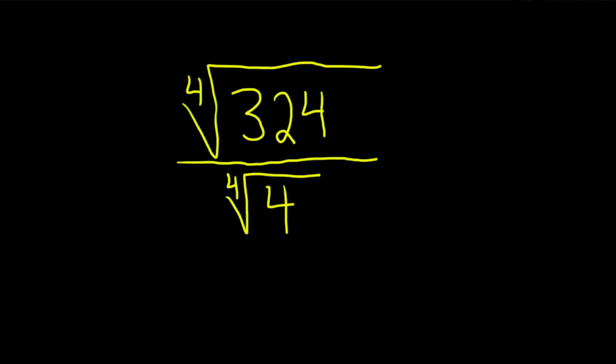Hi, in this problem we have to divide. We have the fourth root of 324 divided by the fourth root of 4. So to do this problem, we basically have to combine these into one fourth root.